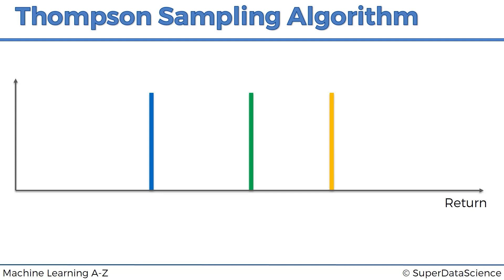This is going to be fun — some interesting slides coming up. So grab your cup of coffee, tea, or popcorn and let's get started. Here we've got a scale; the horizontal axis is the return we expect to get from a bandit. We're going to look at a simplified problem with just three bandits, because there's going to be a lot going on in this chart and we want to keep it as simple as possible to understand the concept.